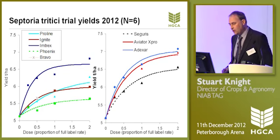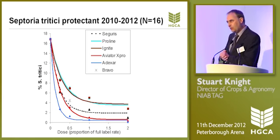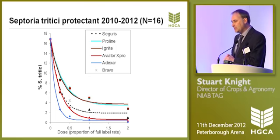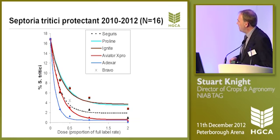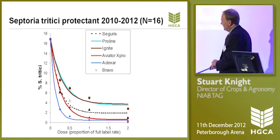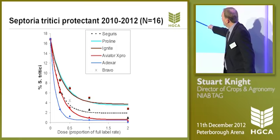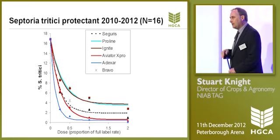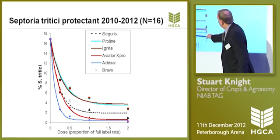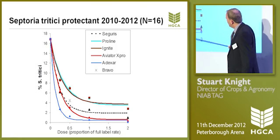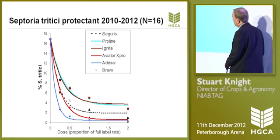Looking at data over three seasons gives a slightly wider spectrum of sites and disease pressures. The story is pretty similar. Here is protectant data from 16 different sets of trials — a lot of data gone into this multi-site, multi-year mean. Again, absolutely nothing to choose between the two leading azoles, Proline and Ignite, the same line. The rank order of the SDHI-azole mixes is the same — Aviator and Adexar very similar, and Seguris just drifting off a little in protecting activity, though the difference is quite small.